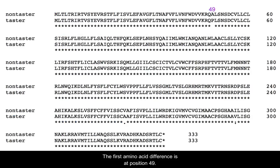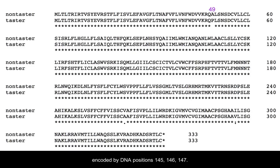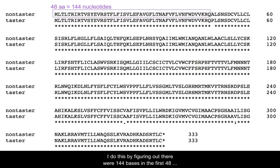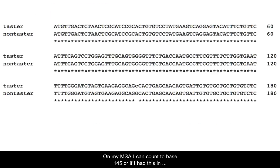The first amino acid difference is at position 49. We can calculate that this amino acid position is encoded by DNA positions 145, 146, and 147. I did this by figuring out that there were 144 bases in the first 48 codons, therefore amino acid codon 49 starts at base position 145.